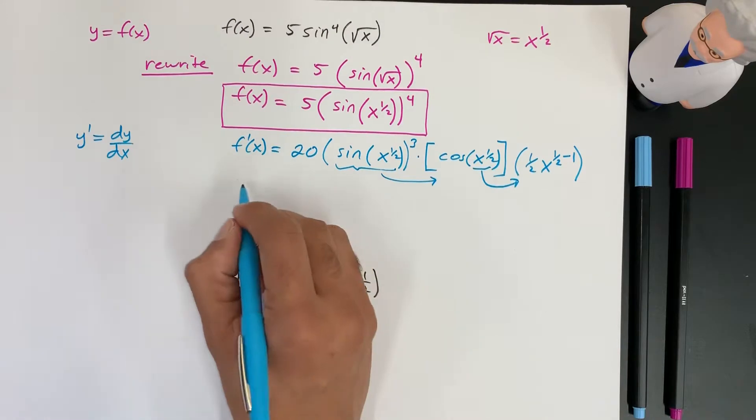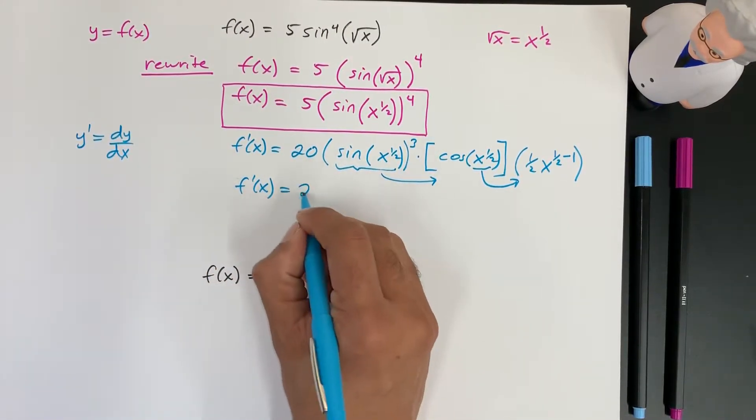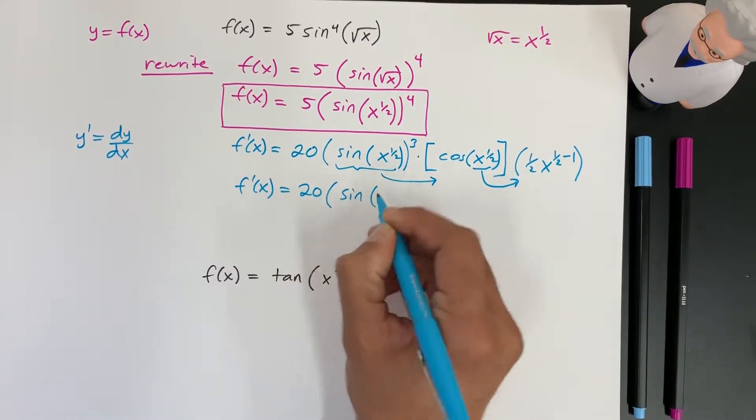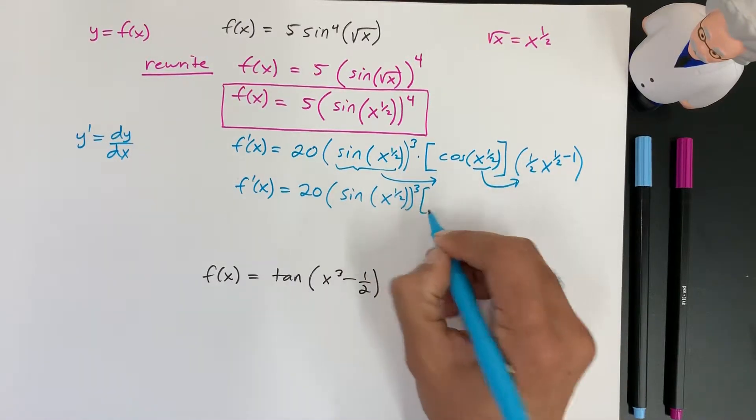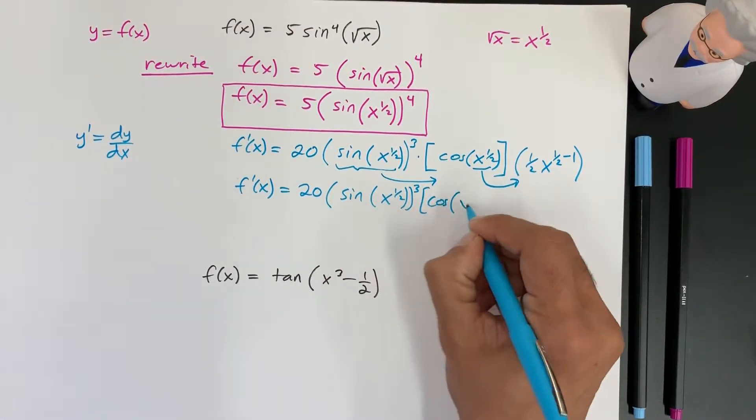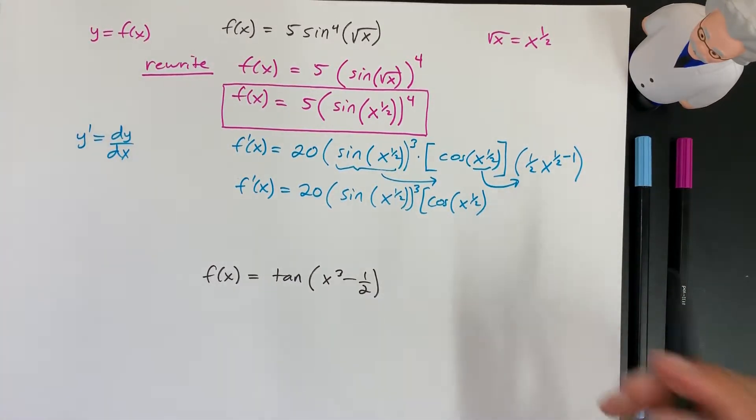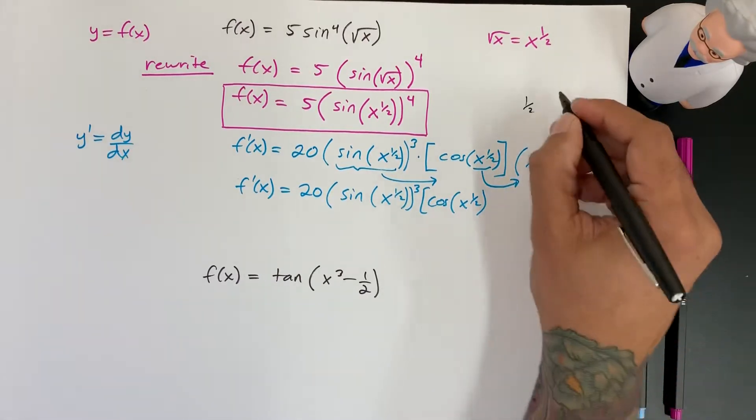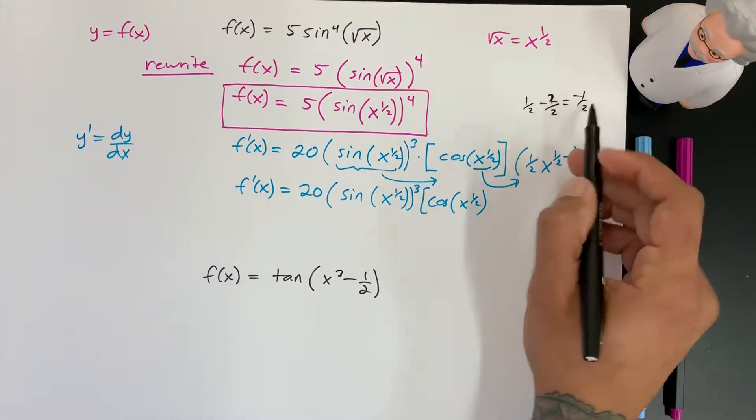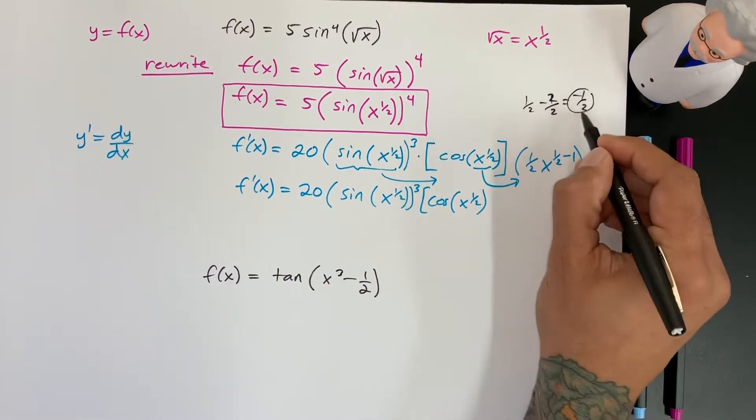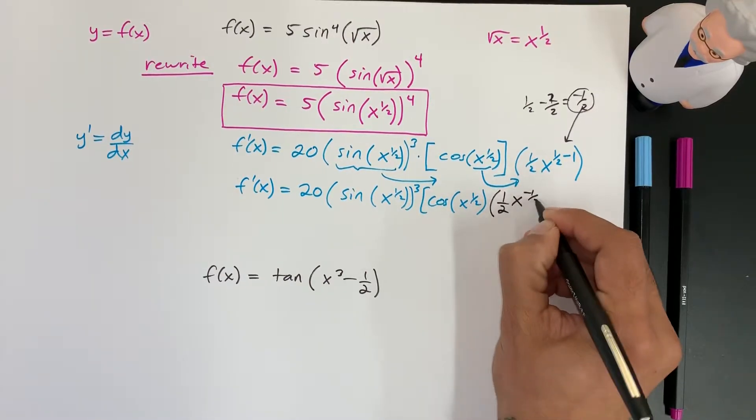So now let's clean this up a little bit. So we got the derivative is equal to 20. Here we have sine of x to the 1/2 raised to the 3rd. We have a cosine of x to the 1/2. And here we can do the algebra on the side. So it's 1 over 2 minus 1, which is just 2 over 2, and that's going to be to the negative 1/2. So here we're going to have 1/2 x to the negative 1/2.